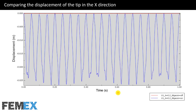Comparing the displacement of the tip in the X direction: the red curve belongs to the linear model and the blue curve to the nonlinear model. The result of the linear model is equal to zero, but the result of the nonlinear model is not equal to zero, showing a periodic behavior.